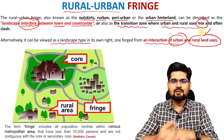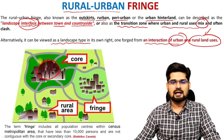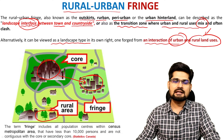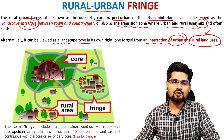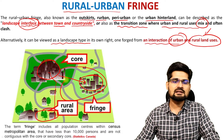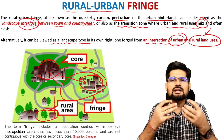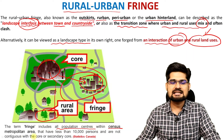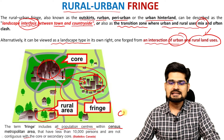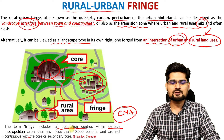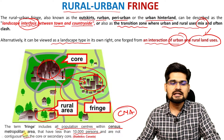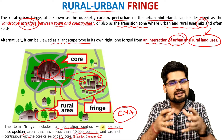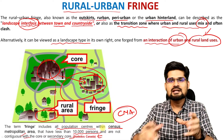Looking at this diagram, this is the city core, and then this is the city fringe as you go away from the core, and then this is the rural area. So what we understand is that if you go from urban area to rural area, in between this fringe area will be there which will have a mixture of land usage. The term fringe includes all population centers within a census metropolitan area (CMA) that have less than 10,000 persons and are not contiguous with the core or secondary core, according to Statistics Canada.